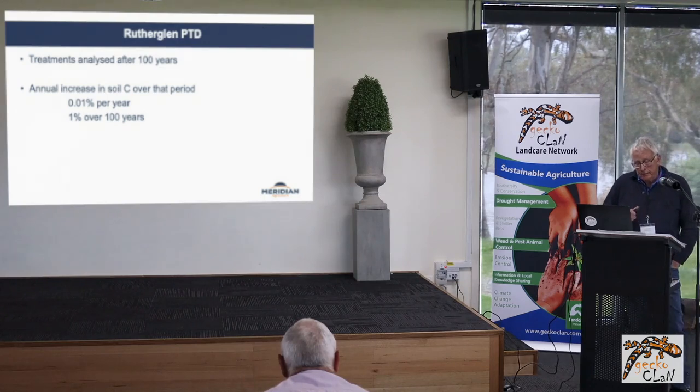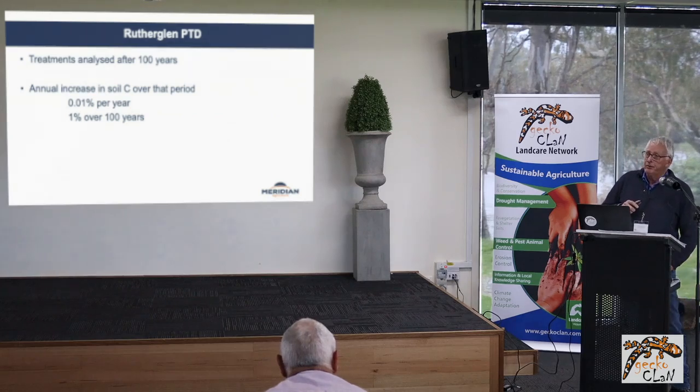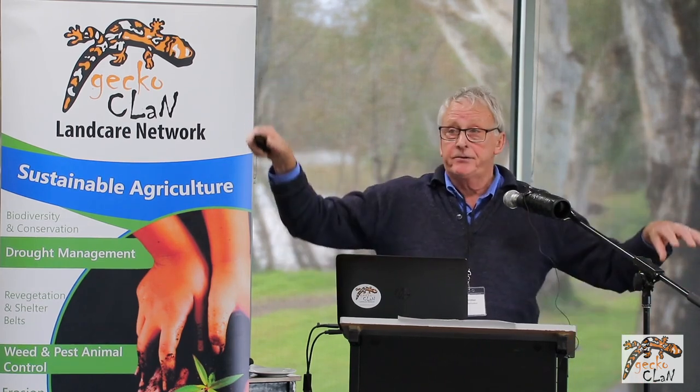Part of the problem ties in with the number of samples you've got to take. You've got differences across the paddock, differences in analytical methods, and to be confident you've got a change you need high numbers of samples. You've got to accept there's going to be an error of maybe plus or minus 10%. Laboratory error for organic carbon is about 15%, and errors are additive. So you can see why you could actually get figures going the right way or the wrong way and vice versa next time around.